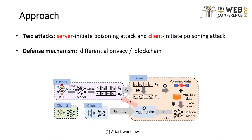We propose two poison attack schemes from both client and server perspectives in FKGE, where the attacker can successfully compromise a victim client's model and fake relations without knowing the training data. We also explore two different mechanisms to resist the attack, including a differential privacy-based method and a blockchain-based method.